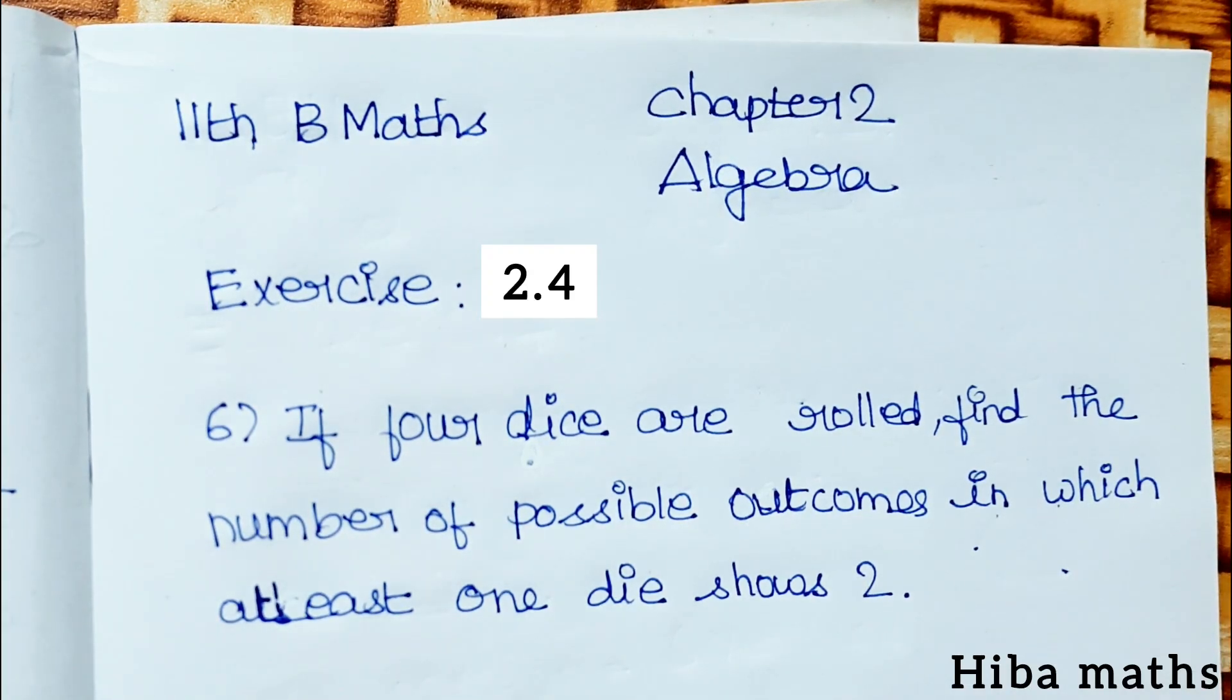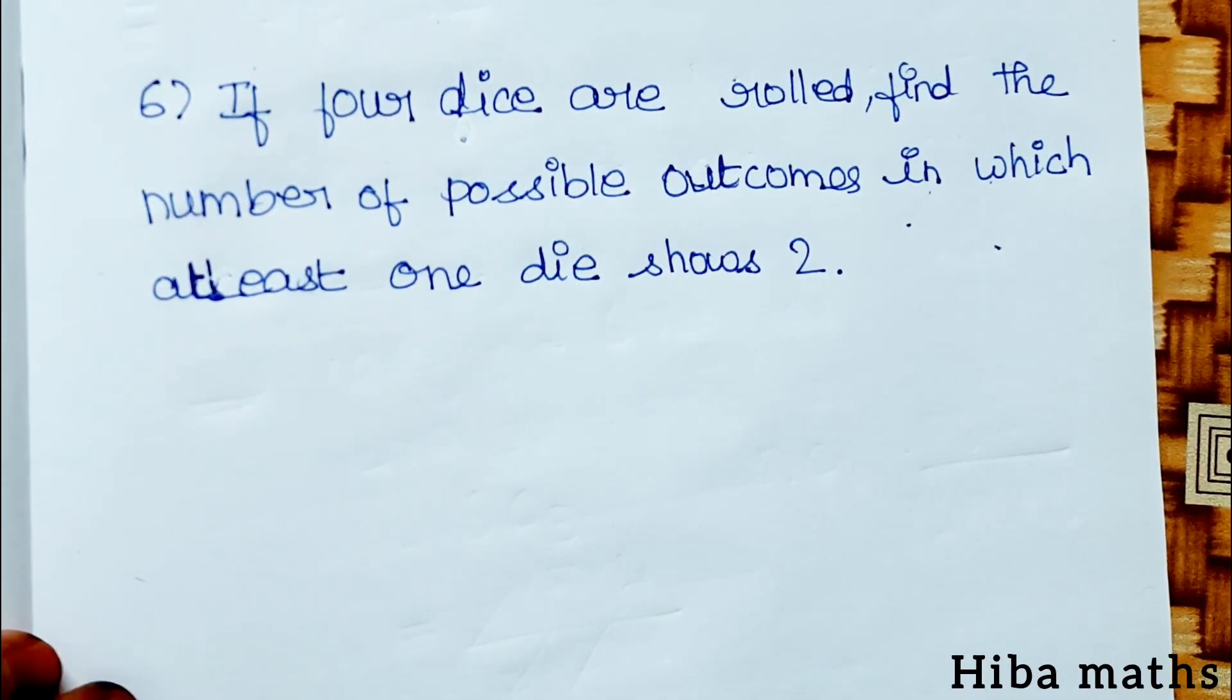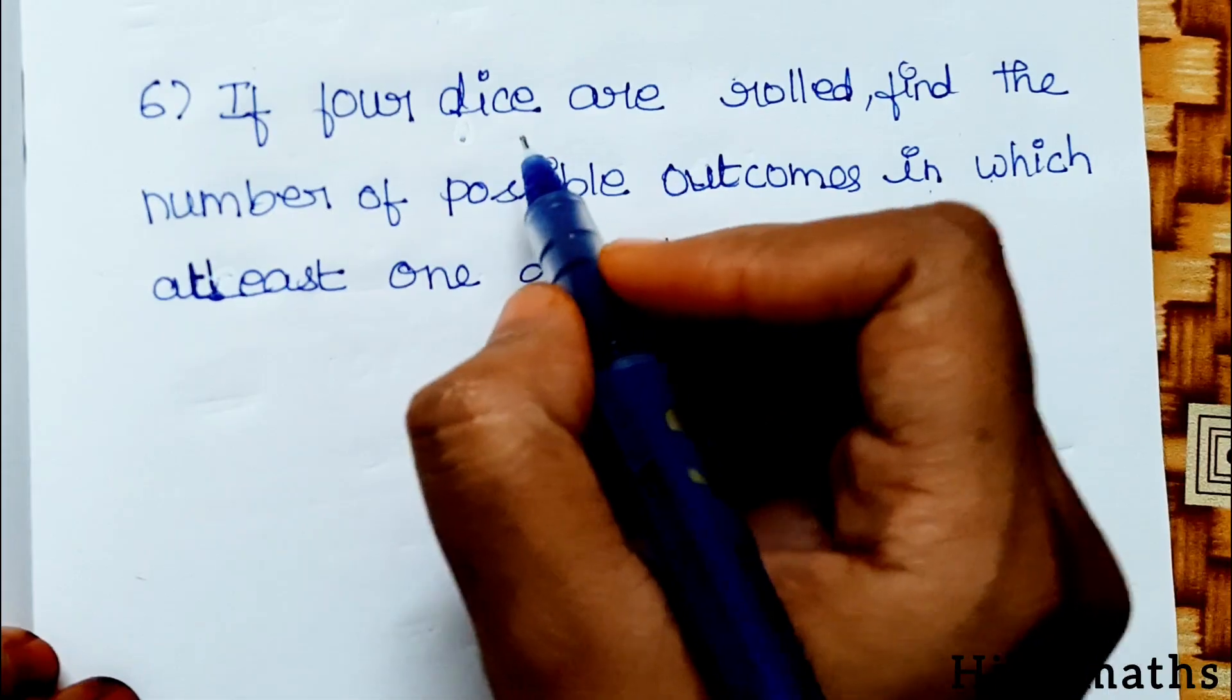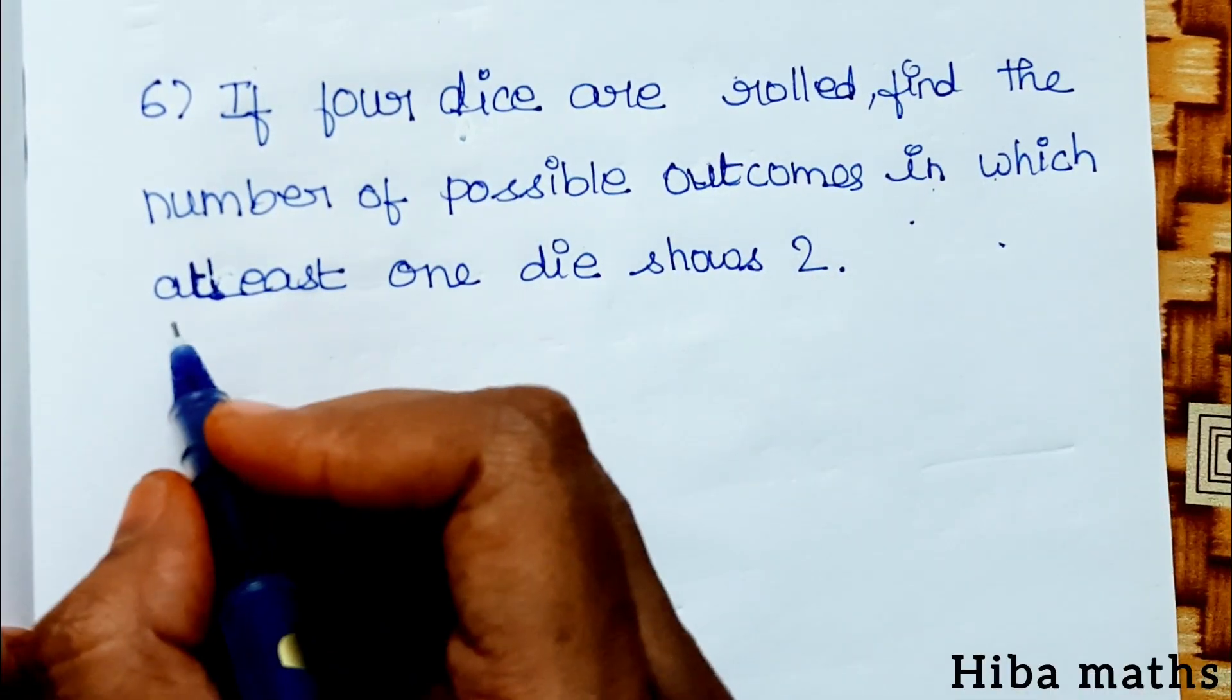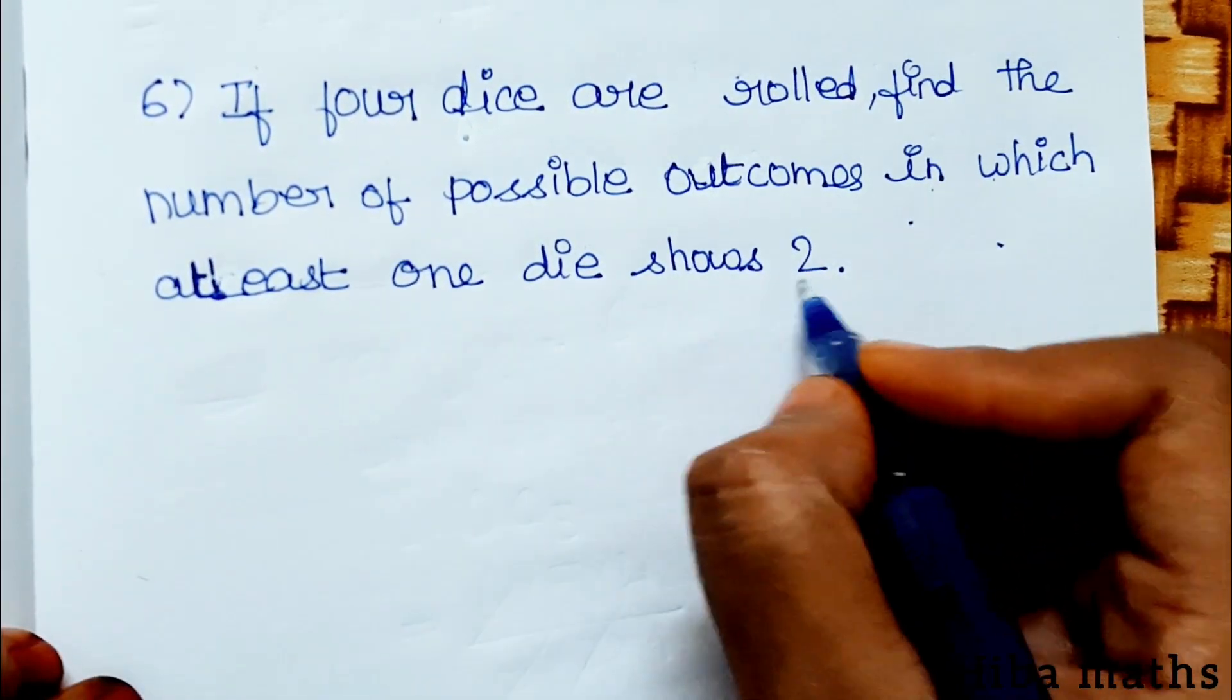Hello students, welcome to Hiba Math XI Standard Business Math Chapter 2, Algebra Exercise 2.4. The sixth question is: if 4 dice are rolled, find the number of possible outcomes in which at least 1 die shows 2.